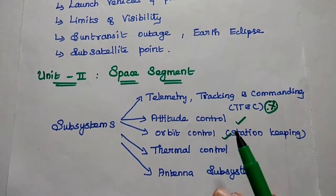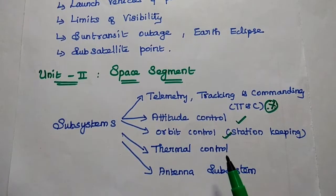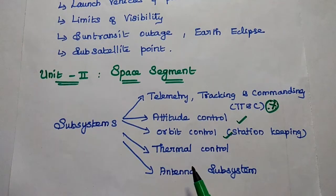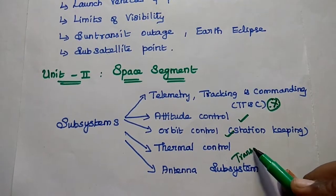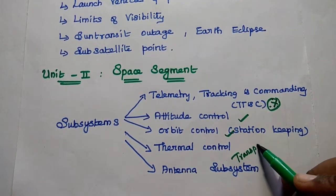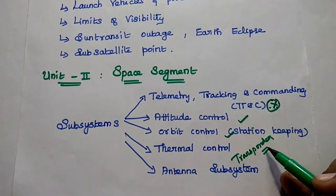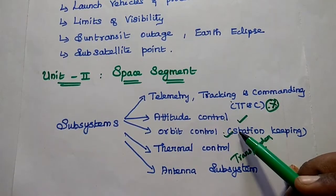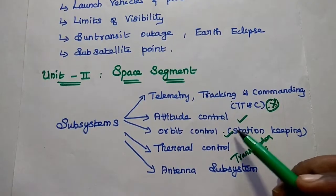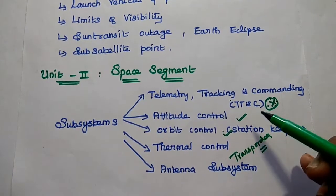Definitely we can expect one question from these three topics. Apart from that we can have thermal control, antenna subsystem, and transponders. We can have some two-mark questions from transponders. Definitely these three topics are very important for the 16-mark or Part B question.